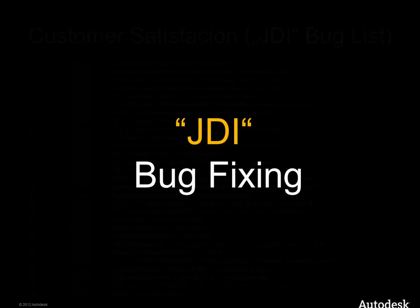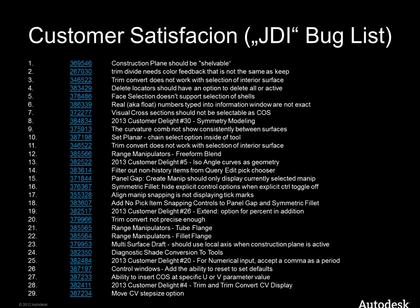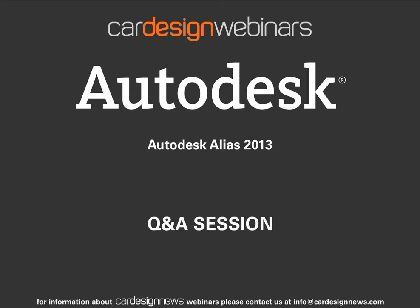JDI bug fixing — I promised to show the list of small but annoying bugs fixed in addition to regular bug fixing. I won't read everything, just the first few: construction planes are now shelfable with their typical options, and trim convert now works with the selection of the interior of the surface. These kinds of bugs get fixed. Maybe you'll see your favorite bug here fixed. That's the end of my presentation. Thank you — I'm open to answer your questions now.